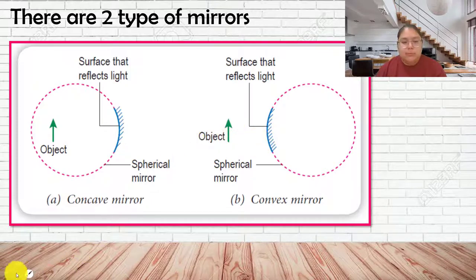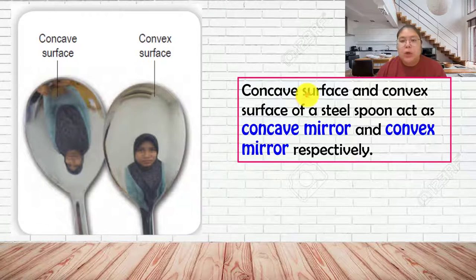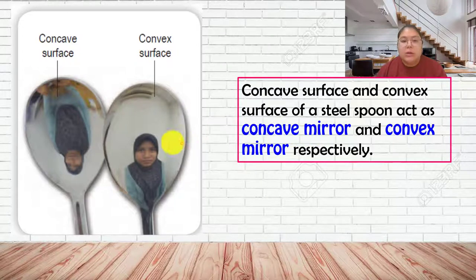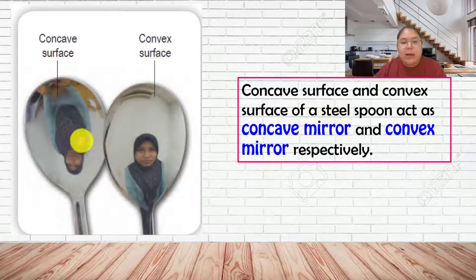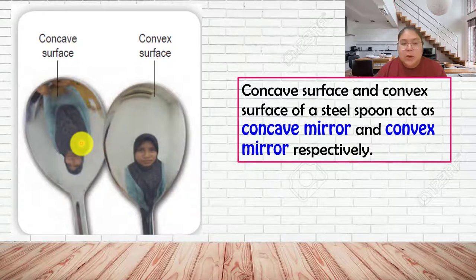This is an example showing the difference in images formed by concave and convex surfaces - using a steel spoon. The concave surface gives an image that is reversed - we call it inverted. The convex surface gives an image that is still upright, but the size becomes smaller.